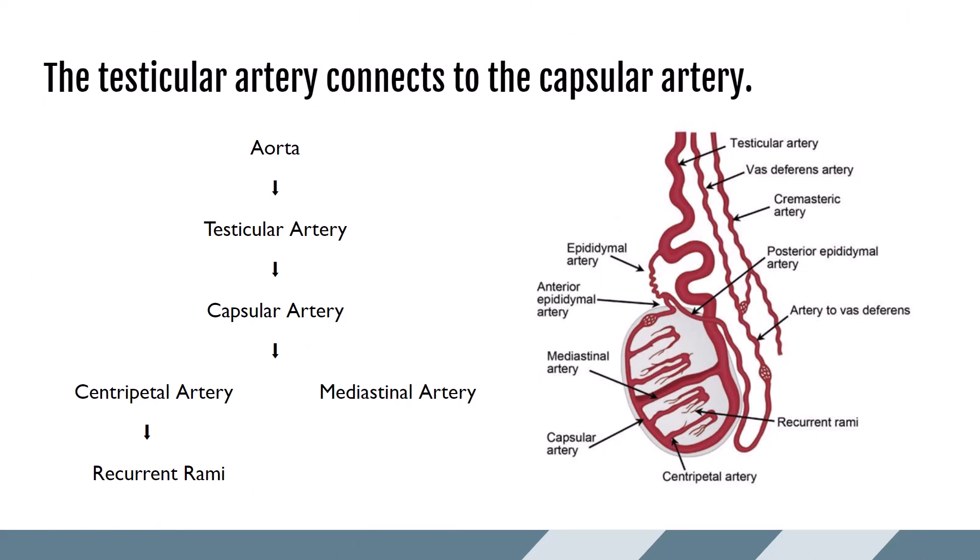At the testicular hilum, the testicular artery will pierce the tunica albuginea, enter the testicle, and become the capsular artery, which travels around the periphery of the testicle. The centripetal arteries branch off the capsular arteries and travel along the lobule septations toward the mediastinum. Recurrent rami and the mediastinal artery are central in the testicle. Before reaching the mediastinum, the recurrent rami curve back on themselves — almost representing a candy cane shape — and these form the centrifugal arteries.